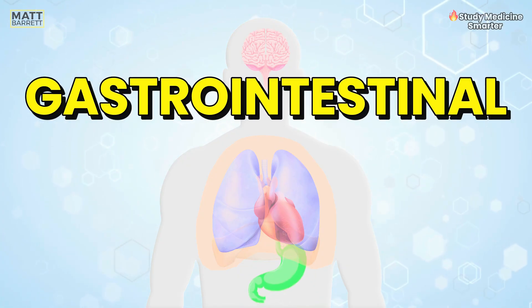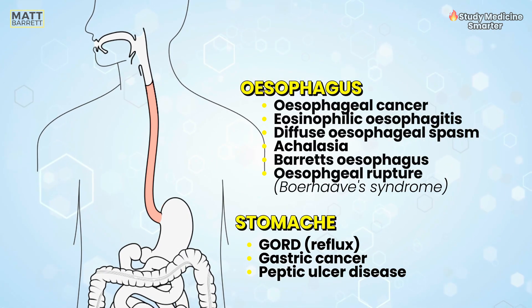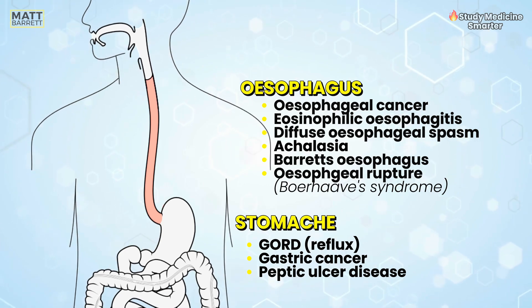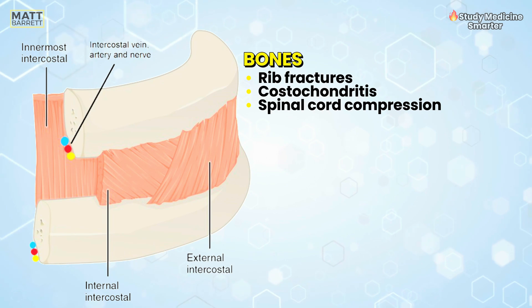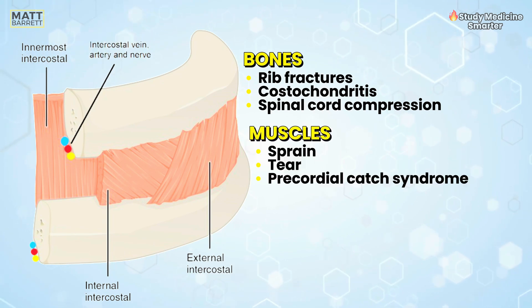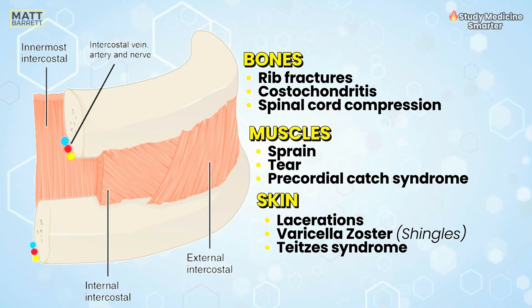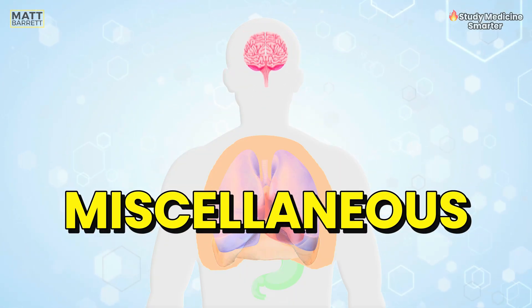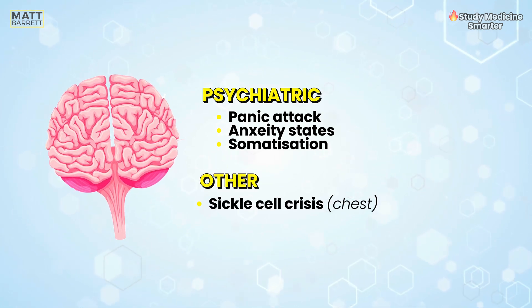Gastrointestinal — think anatomically again. You've got the long tube of the oesophagus and then the stomach. A lot of presentations for chest pain come into the GI category. Musculoskeletal: think of the bones, the muscle and the skin. The bones can give rib fractures, the muscles muscular tears, and the skin can be due to varicella zoster virus. And lastly there's a miscellaneous category — mainly psychiatric problems, including panic attacks and anxiety states, but we'll touch on that a bit later.